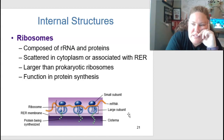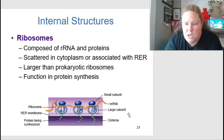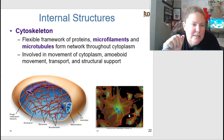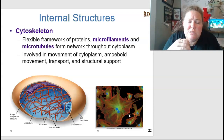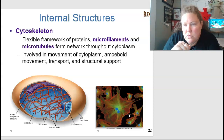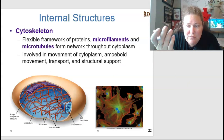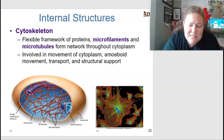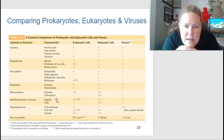Ribosomes are composed of ribosomal RNA and proteins, scattered in the cytoplasm or associated with the rough ER. They are larger than prokaryotic ribosomes but also function in protein synthesis. The cytoskeleton is the flexible framework of proteins, microfilaments, and microtubules forming a network through the cytoplasm. It functions in cytoplasmic movement, amoeboid movement, transport, and structural support — like scaffolding at a construction site.